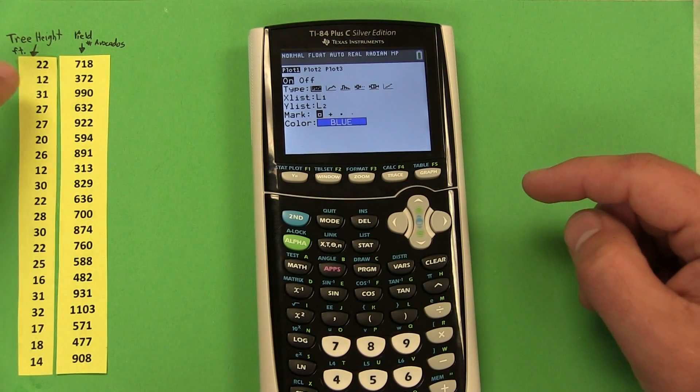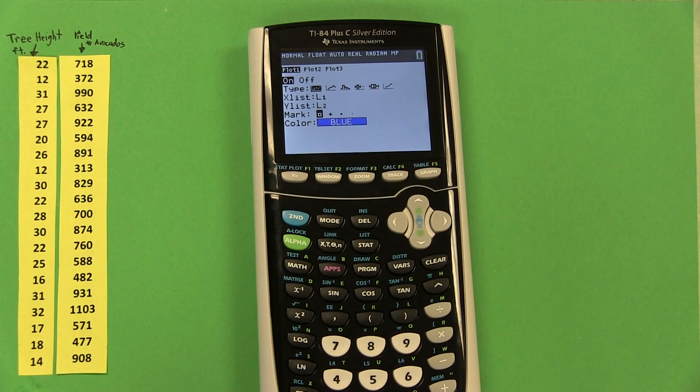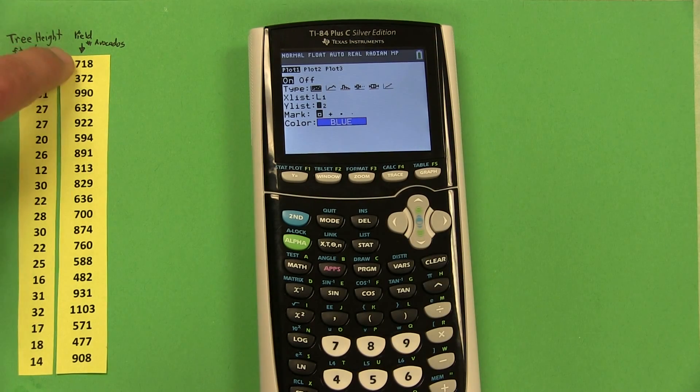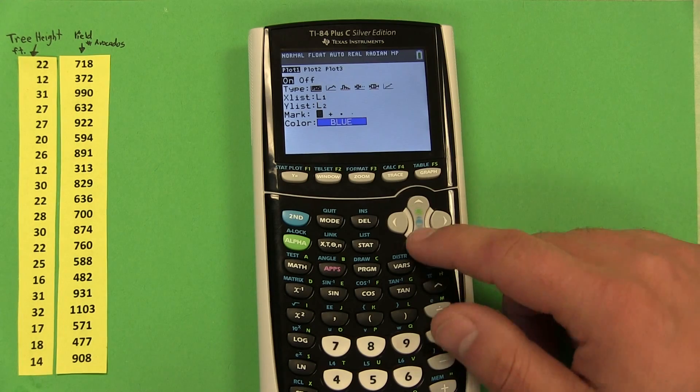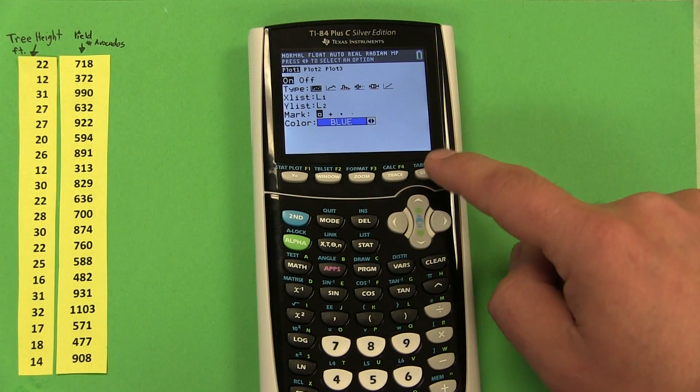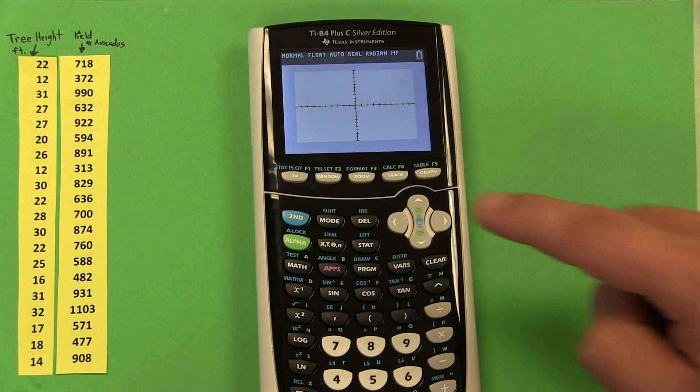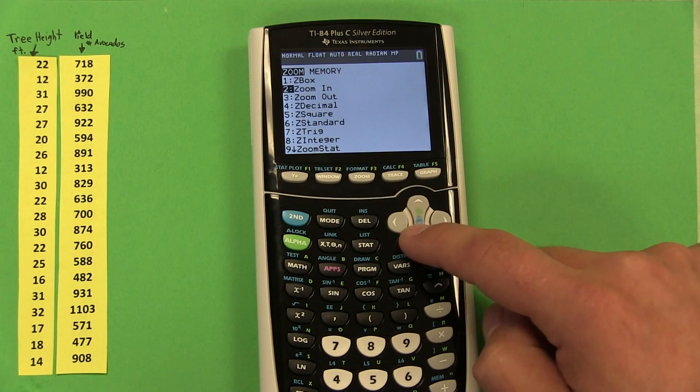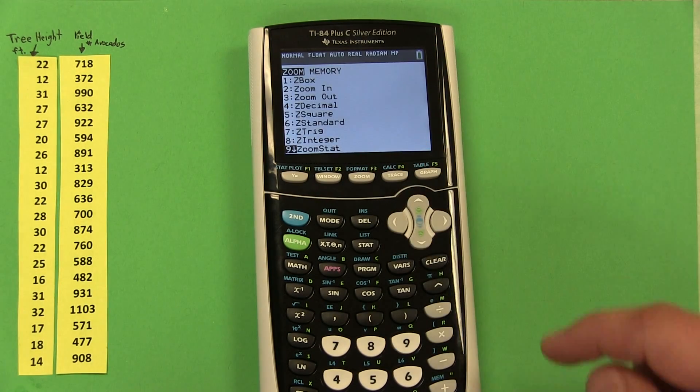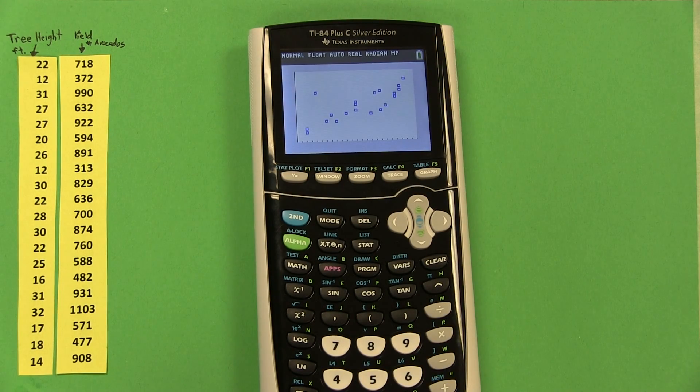Now since we typed our explanatory variable tree height into list 1, we want our xlist to be list 1. And our response variable avocado yield is in list 2, that will be our y. You can choose whatever marker you want and you can even choose the color. But once you're ready to go, press graph and you'll probably see nothing. That's because we're not zoomed correctly. To fix this, press the zoom key and go down to the 9th option, which is zoom stat. You can also just press 9. There's our scatter plot.